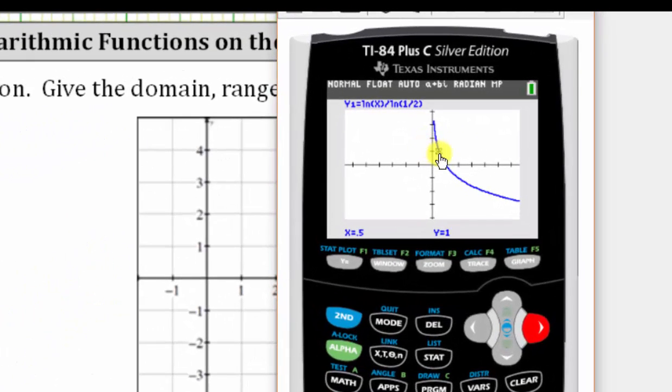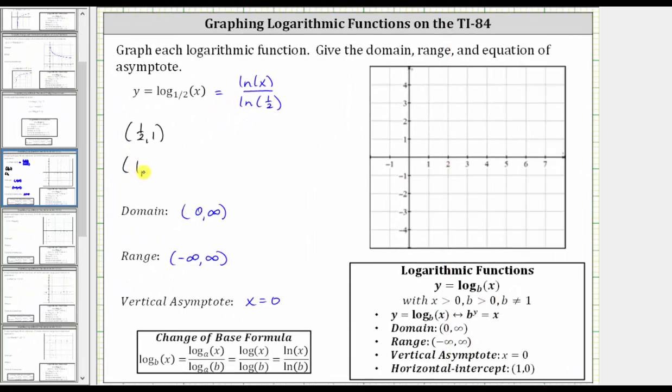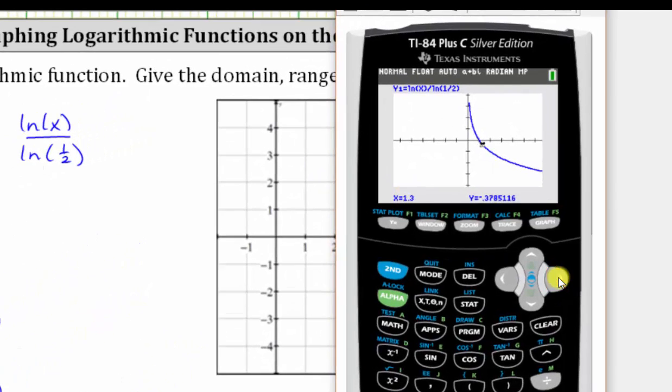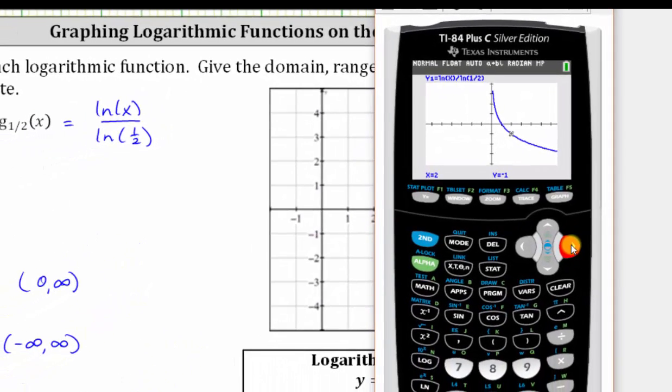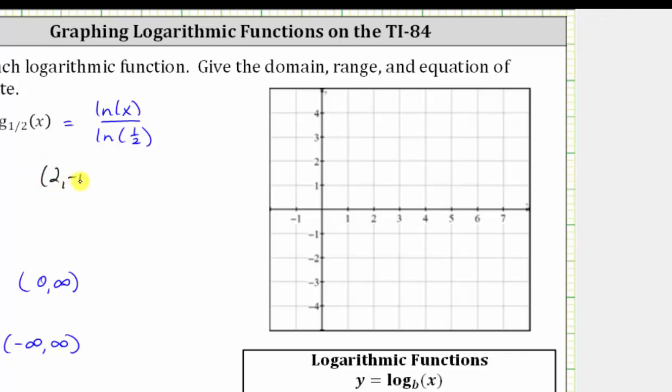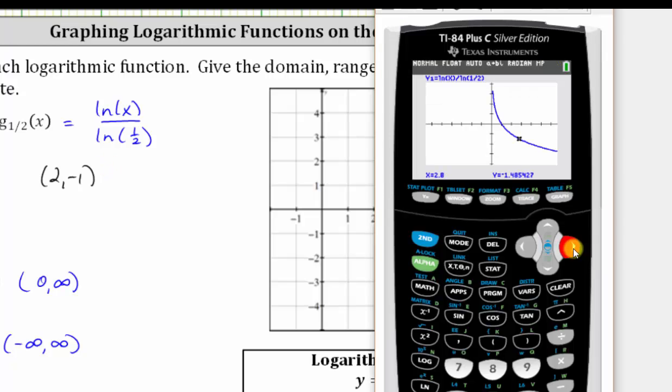And now we keep scrolling to find more convenient points. And notice how the horizontal intercept is the point 1 comma 0. Let's scroll out to x equals 2. 2 comma negative 1 is a point on the graph. Let's scroll out to 3. Notice when x is 3, we'd have to get a decimal approximation for y. Let's scroll to x equals 4. Notice 4 comma negative 2 is another convenient point.